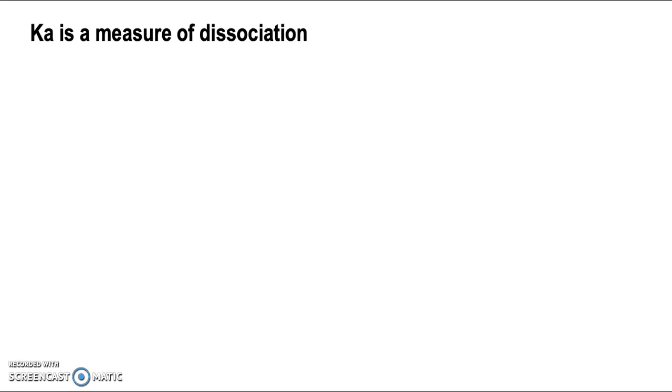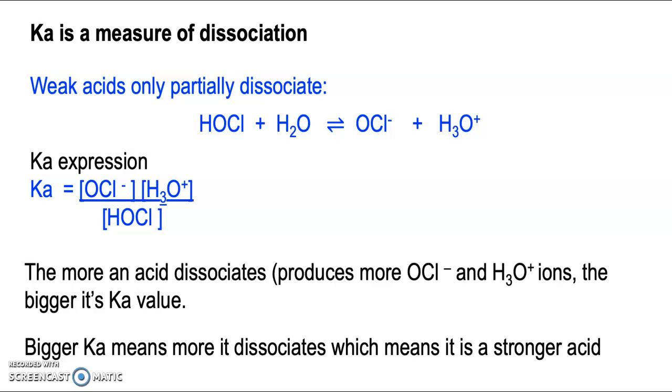Ka is a value that you'll be given and it is a measure of how much a weak acid dissociates. What you can see here is an equation for hypochlorous acid dissociating. You've got the hydrogen, or proton rather, here, which will donate and get accepted by the water and that will produce the conjugate base and the hydronium ions.